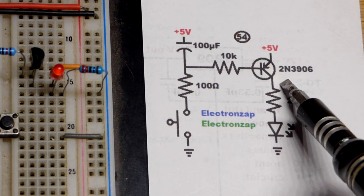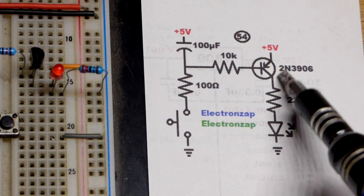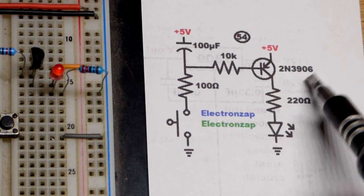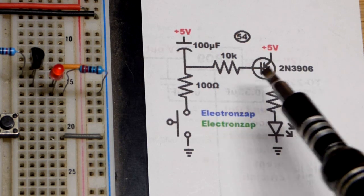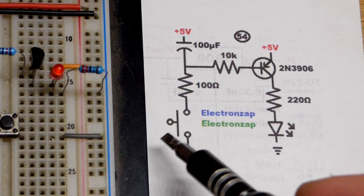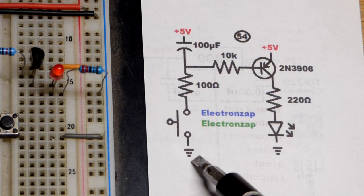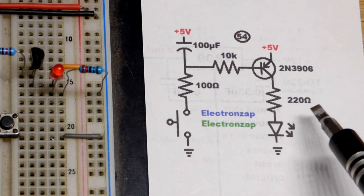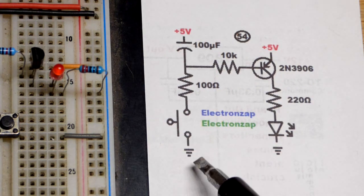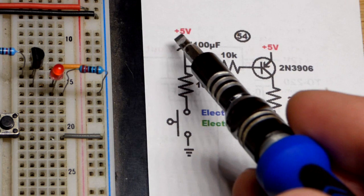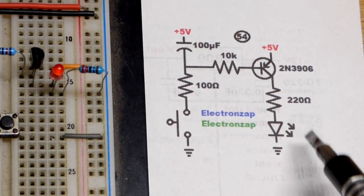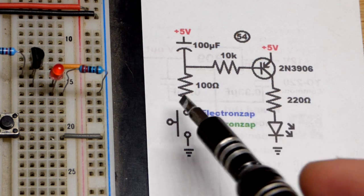We're using a PNP bipolar junction transistor, a 2N3906. Last video we used the NPN version, 2N3904. They basically have the same electrical properties but current flows in the opposite direction. Based on the way we have this wired, it's the same as the last circuit except where there's more positive there's more negative. Some components you have to make sure you insert in the proper direction, such as a polarized capacitor and an LED. Otherwise everything else is just a mirroring of the last video.